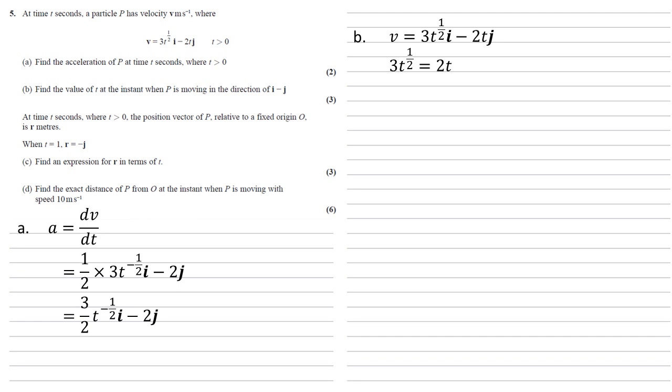So solving this, we're going to divide 3 by t to the half, which gives us 3 equals 2t to the half. Dividing both sides by 2, we get that t to the half equals 3 over 2. And squaring both sides gives us that t equals 9 over 4.